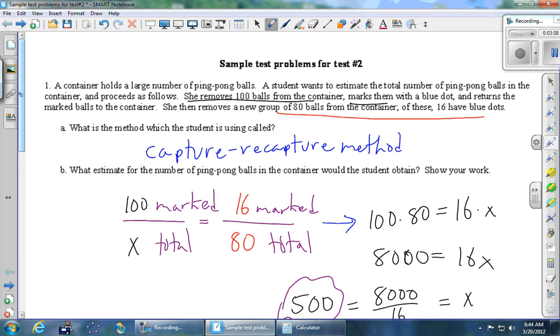So reading the problem again, just the highlights. She marked some balls, she returned them to the container, and then removed a new group of balls. And the problem is that because it's not explicitly stated here, I guess we can assume that she didn't mix up the balls. And if she didn't mix up the balls, then the balls that are sitting at the top of the container are probably mostly these ones that she marked in the first place. And so she really wants to mix them up.